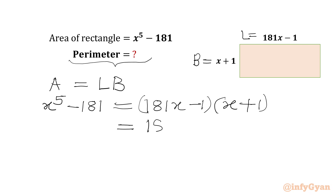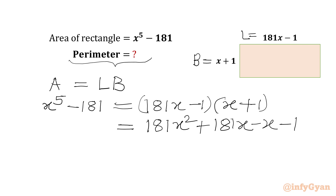We will get 181x times x, which is 181x squared. Then multiplying out (181x minus 1)(x plus 1), we get 181x squared plus 181x minus x minus 1, which simplifies to 181x squared plus 180x minus 1.